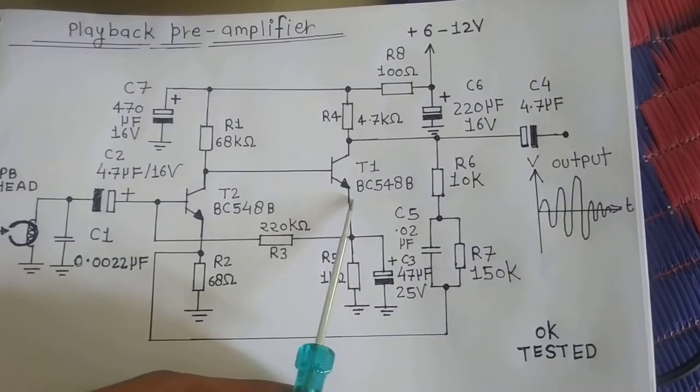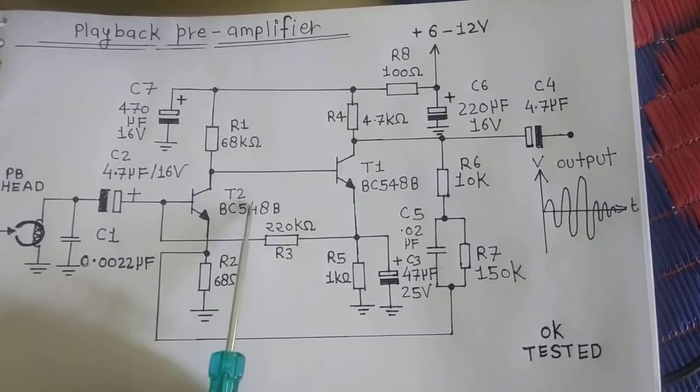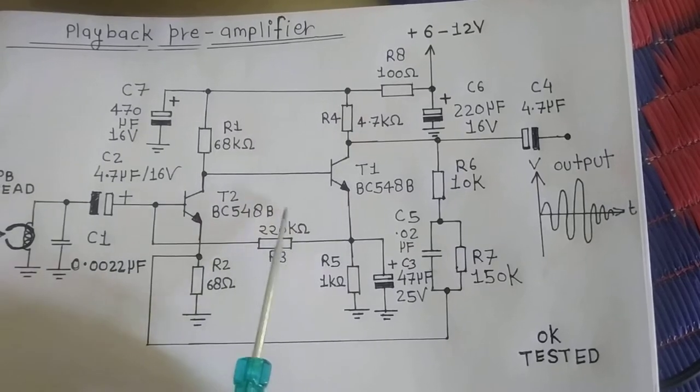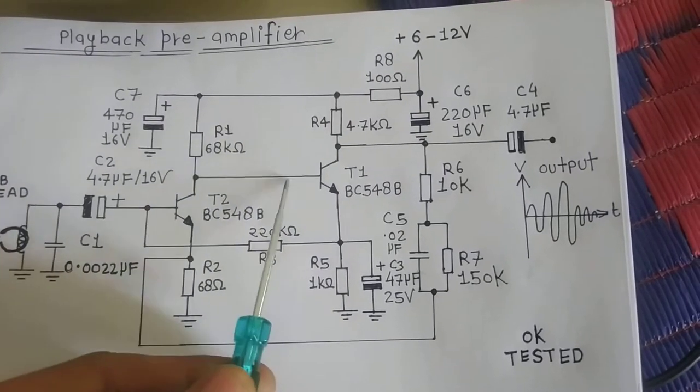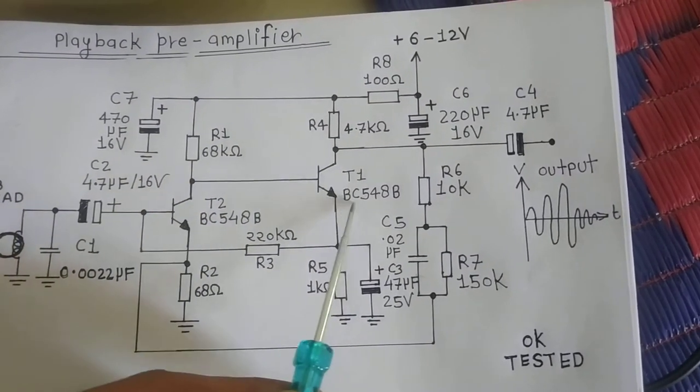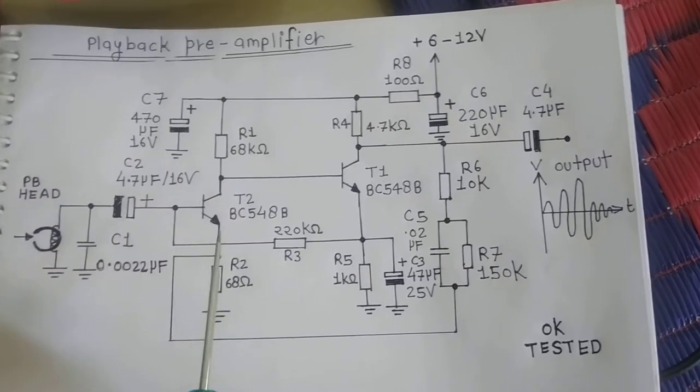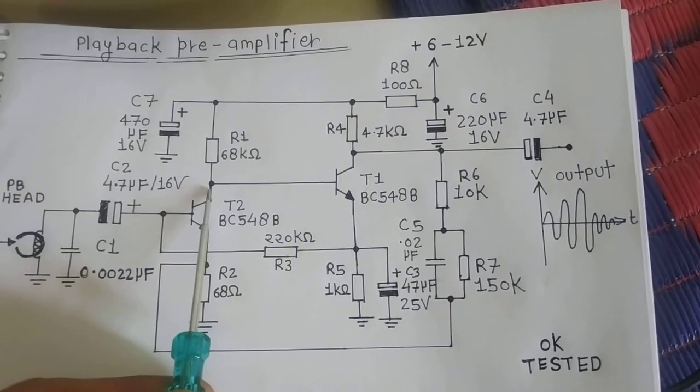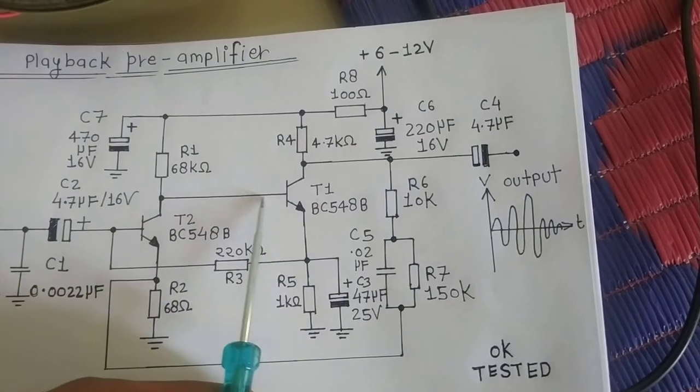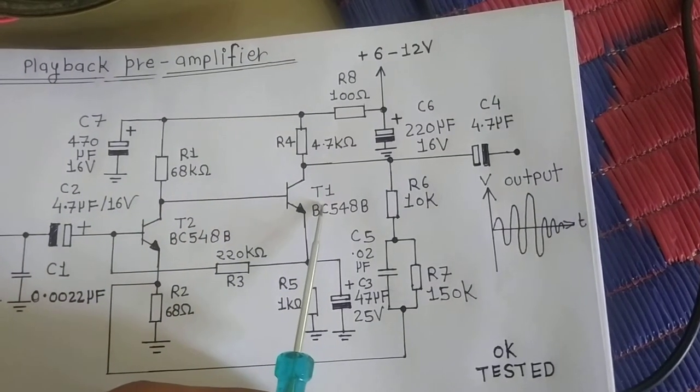These two transistors form a direct coupled amplifier because there is no coupling device between these two transistors. You can see the output of the first transistor is directly connected to the base of the second transistor.